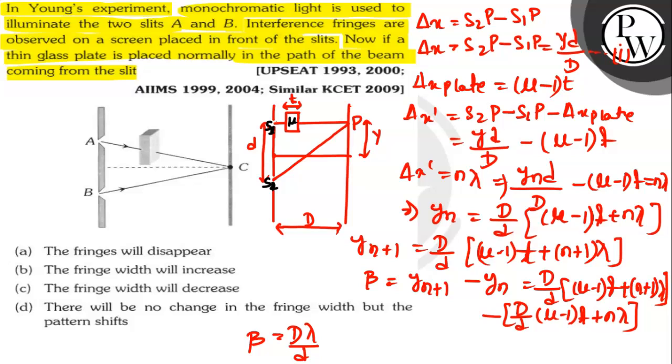So even after placing the glass plate, the width of fringes don't increase neither decrease. It remains constant. Here option D is the correct answer. There will be no change in the fringe width but the pattern shifts.